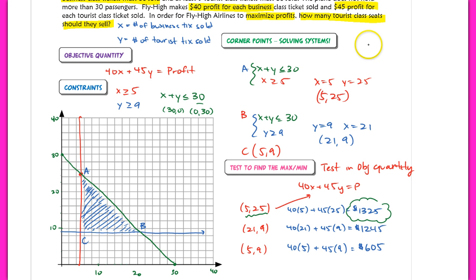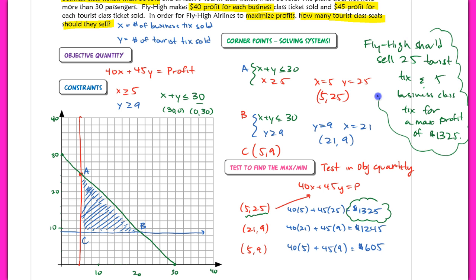So in this case, the Fly High company here should sell 25 tourist tickets and five business class tickets for a max profit of 1,325. So I kind of included a little bit more information than what the question actually asked. But this is typically what your answer should look like.